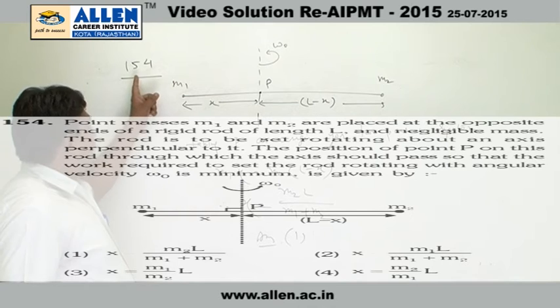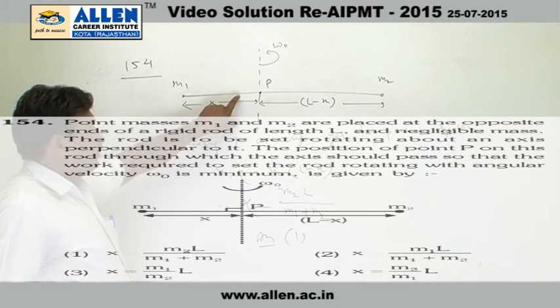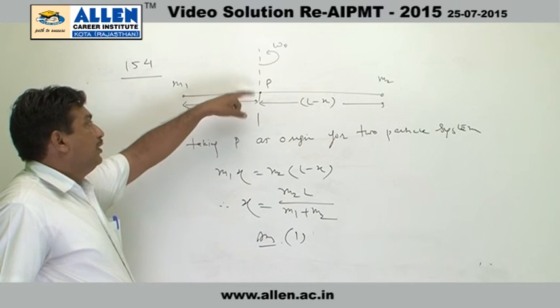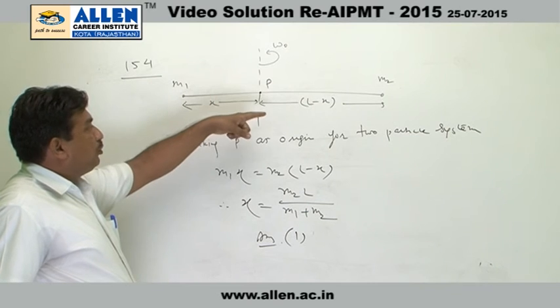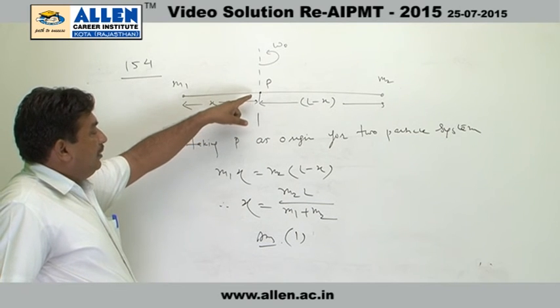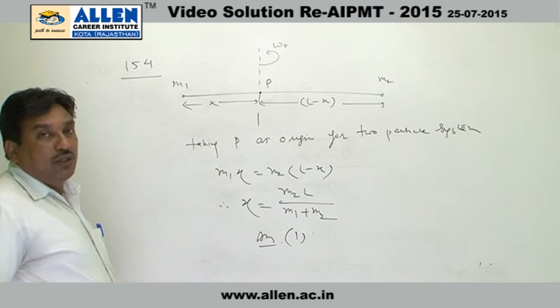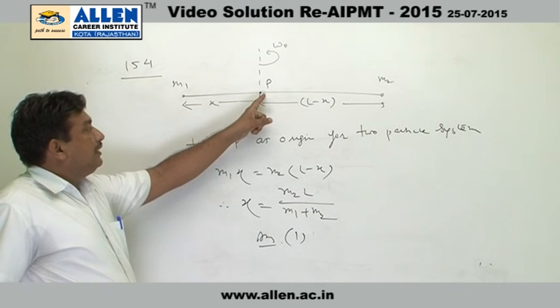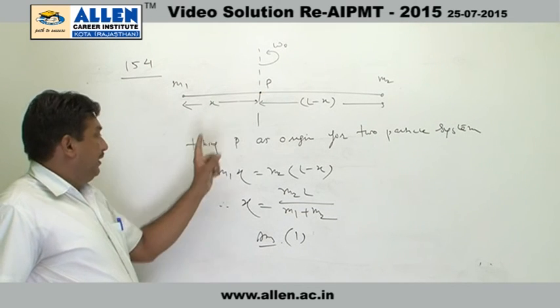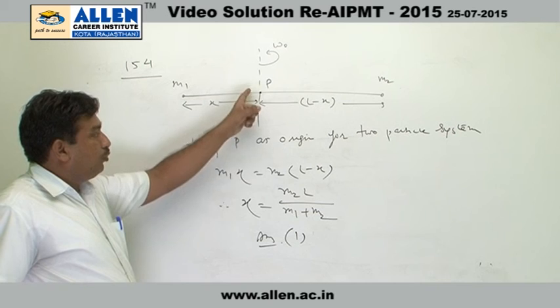In question number 154, we want to make the rotation of rod perpendicular to the axis. So definitely the system should be arranged in such a way that the rotation should take place about the center of mass. We consider the point P as the center of mass, and if we take P as origin, then for a two particle system, we can write down M1·x1 equal to M2·x2.